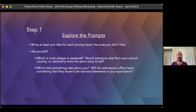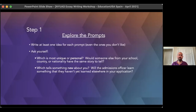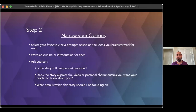Also ask yourself, is this telling something new? Am I just repeating something they can already find in my application? Am I just connecting a bunch of bullet points I've already mentioned somewhere else? So really look at the ideas you've come up with. The next step is to choose two, or maybe even three of them that you feel meet those qualifications — that are unique and personal — and go ahead and write an outline.